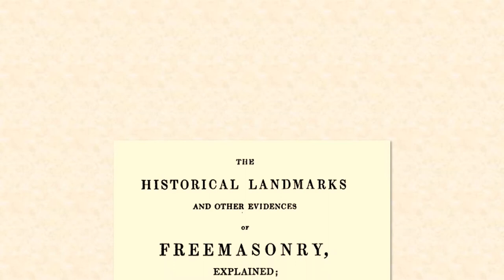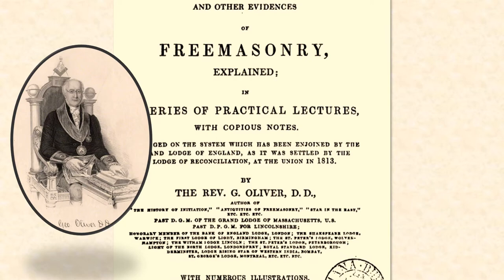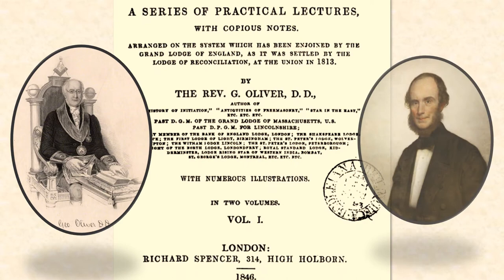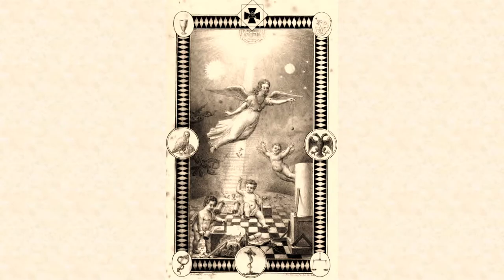The Allegory of Freemasons — Freemasonry — which we'll be examining today, appears as the frontispiece of 'The Historical Landmarks and Other Evidences of Freemasonry Explained in a Series of Practical Lectures,' published by the Reverend G. Oliver in London in 1846. The illustration itself was prepared by John Harris, the artist responsible for most of the common tracing boards in use throughout the English-speaking world today.